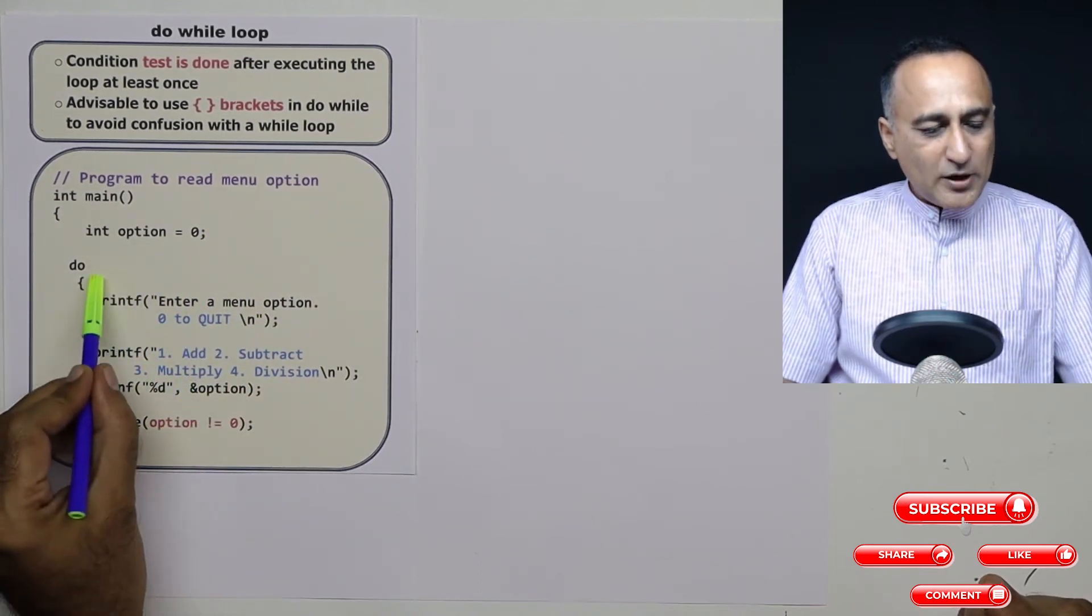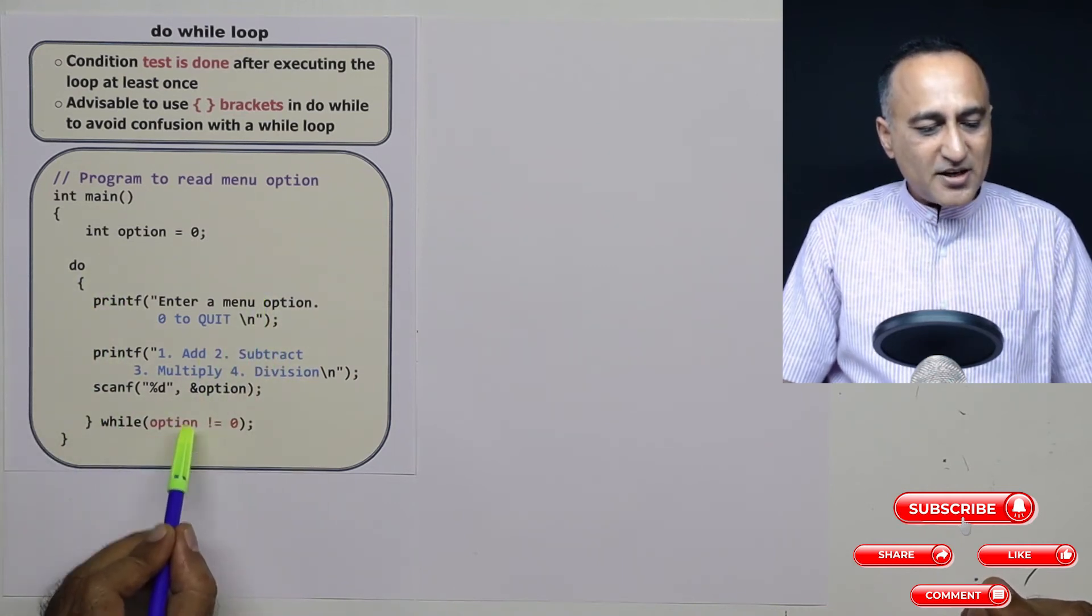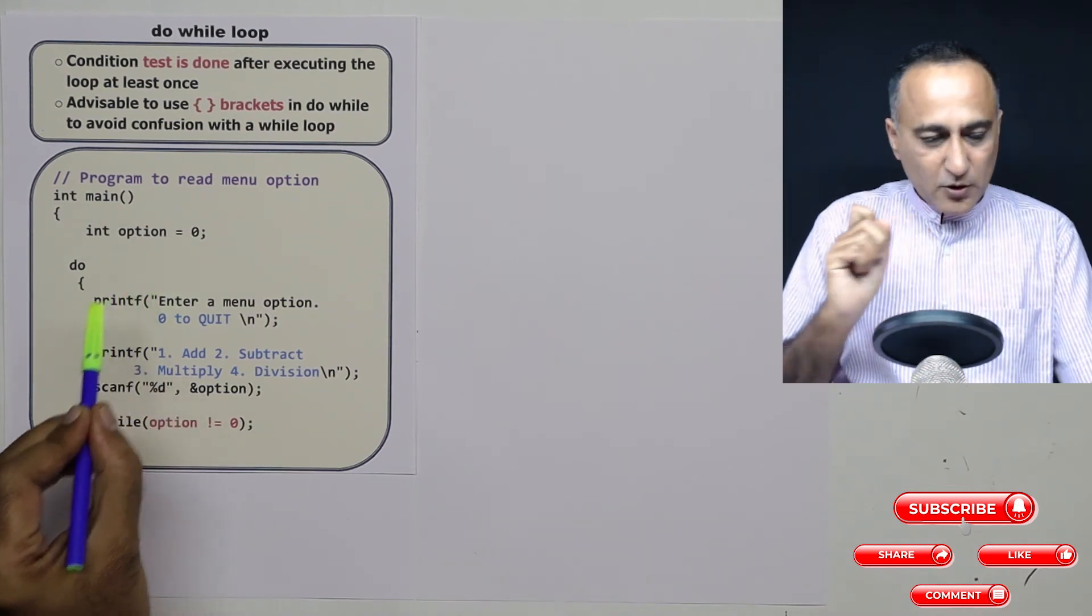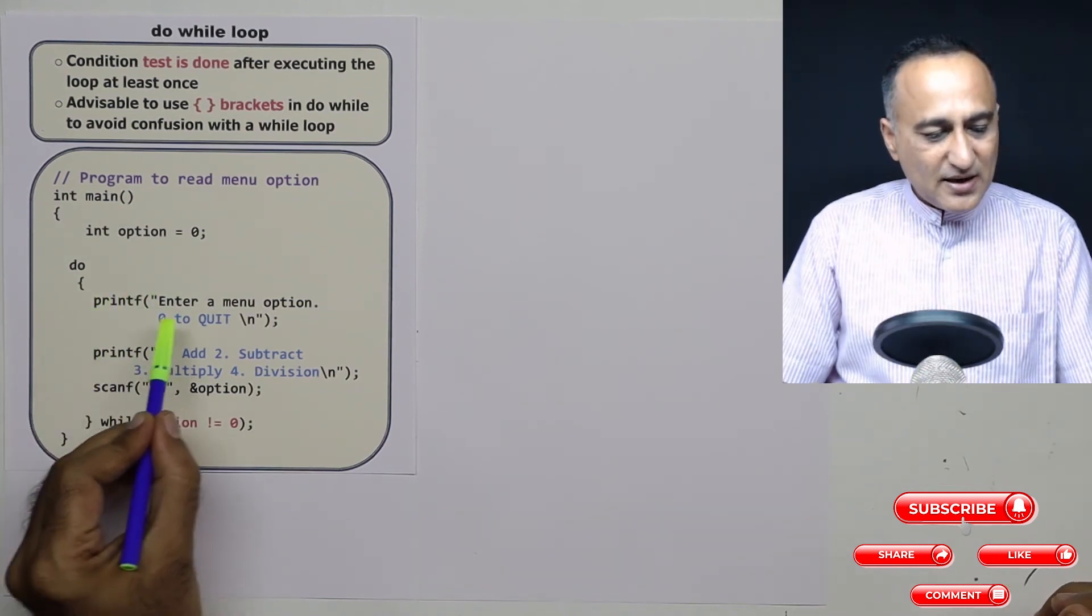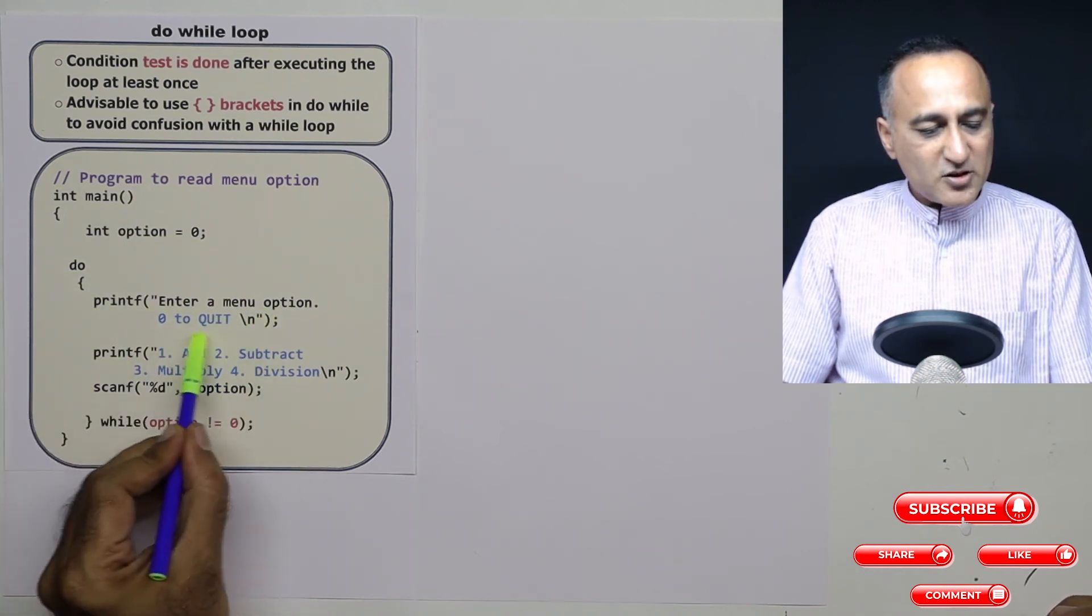Now if I had used the while loop, this body would have not got executed even once because the condition would have been false at the very beginning. But by using the do while loop, the advantage I have is I'm asking the user do enter a menu option and zero to quit.